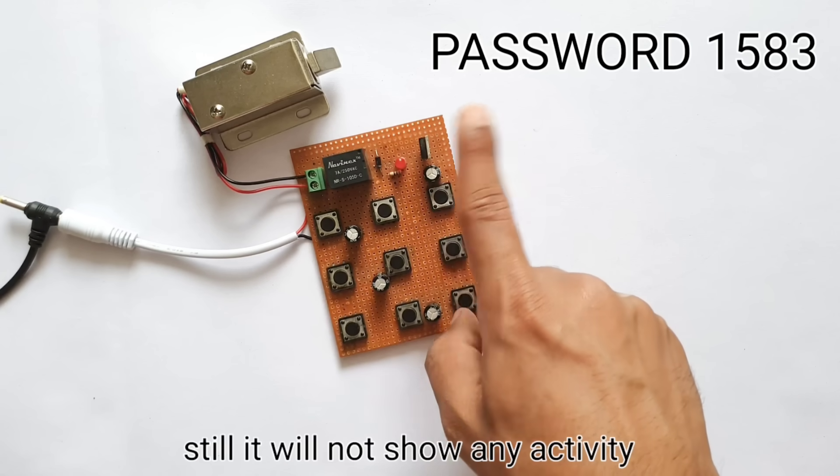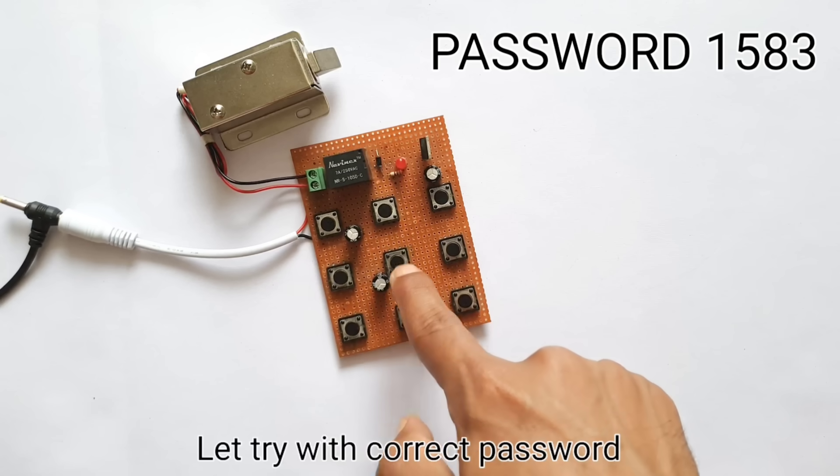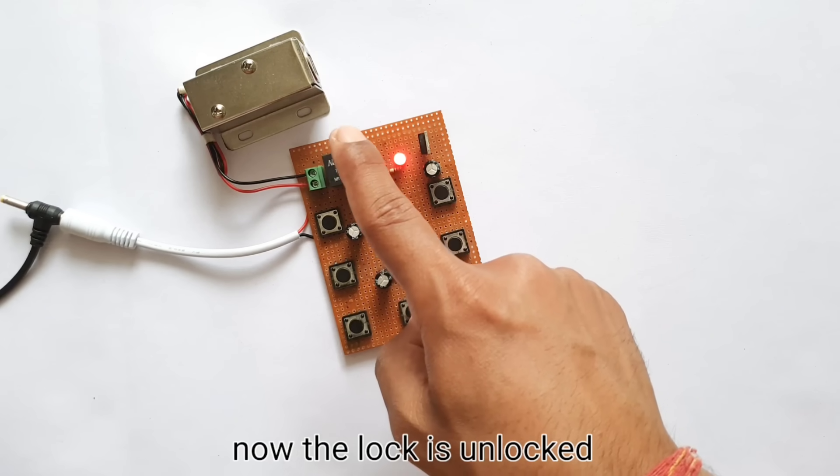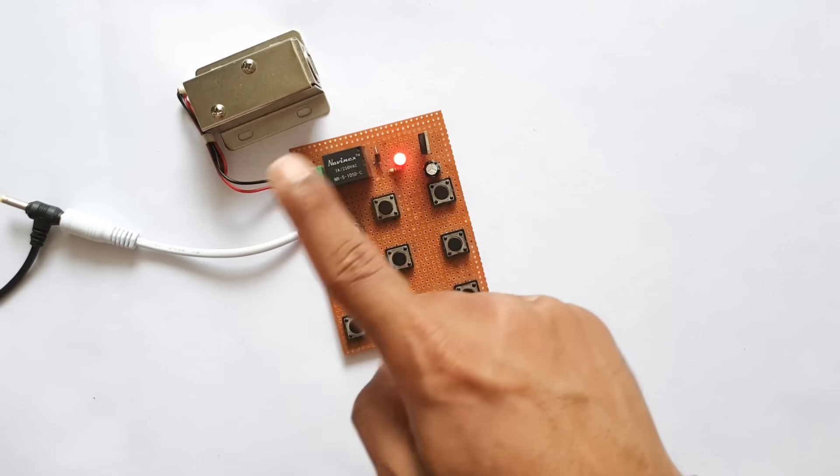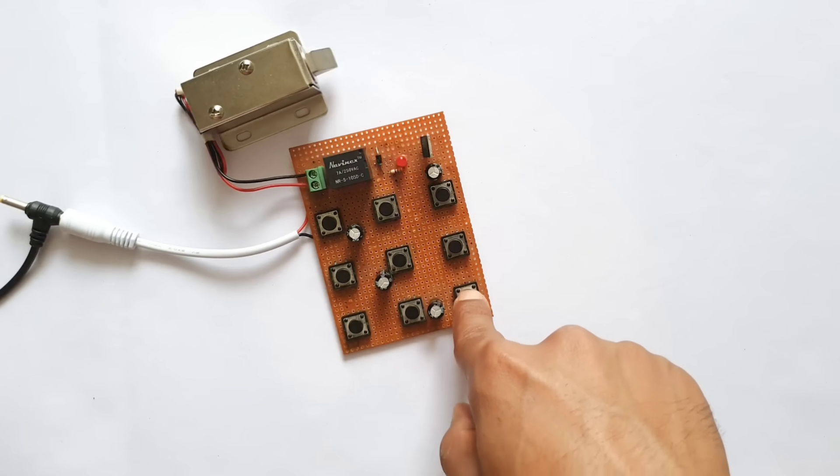This is a key security feature to prevent any unauthorized access. But the moment you enter the correct password, the system recognizes it, and as you can see, the door automatically unlocks. There's also a reset switch located at the bottom. So today, we've built a password-protected door lock system.